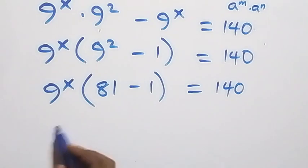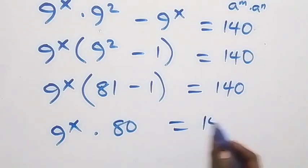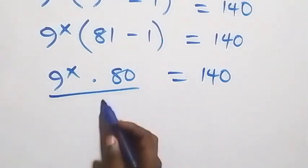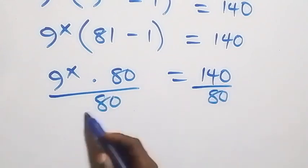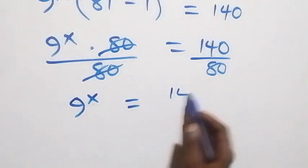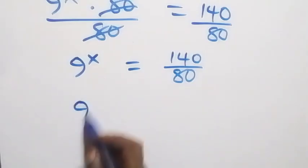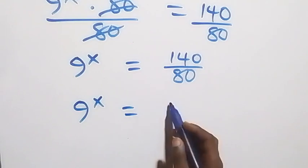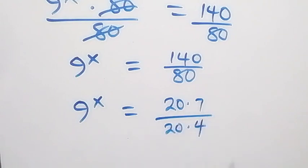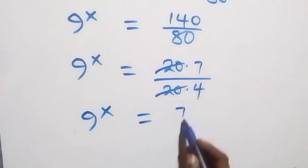Here we have n raised to power x times 81 minus 1, that's 80, equals 140. Then we divide both sides by 80: 80 cancels each other, which implies n raised to power x equals 140 over 80. That is, 20 cancels each other and we have n raised to power x equals 7 over 4.